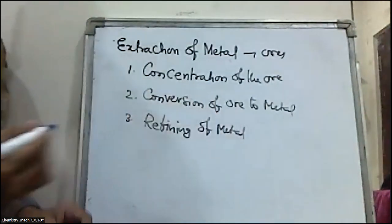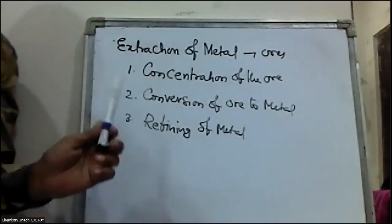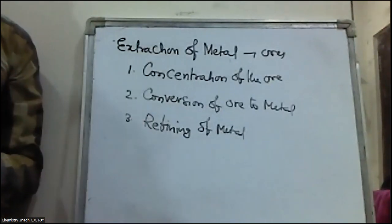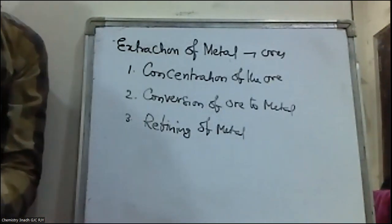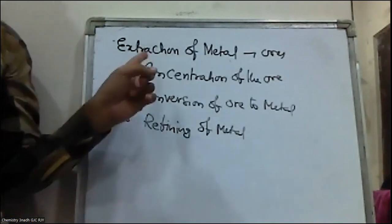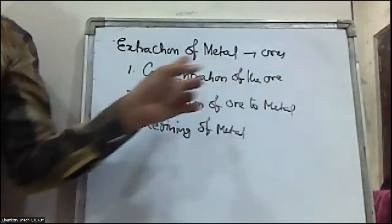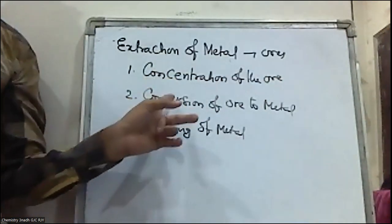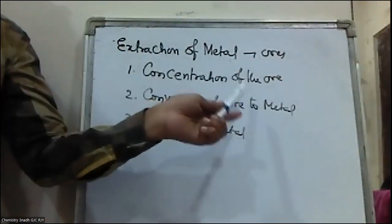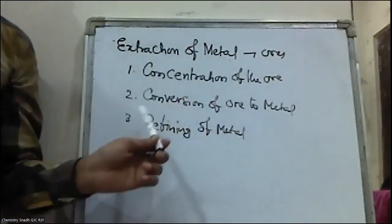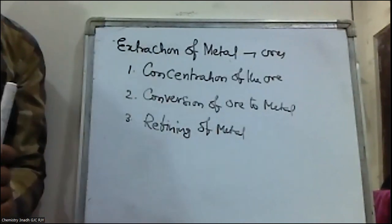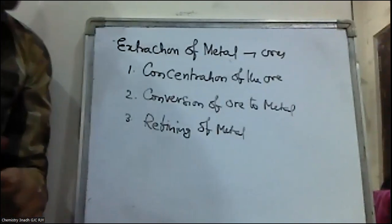Refining means purification of the metal. Any metallurgical process involves these three steps: concentration of the ore, conversion of ore to metal, and third one is refining or purification of the metal.